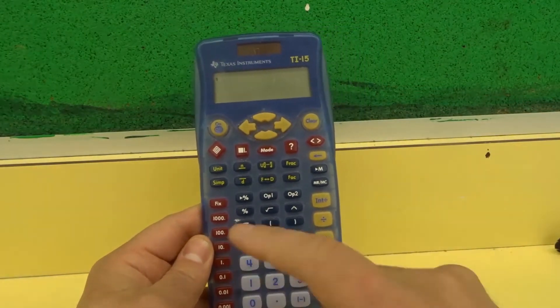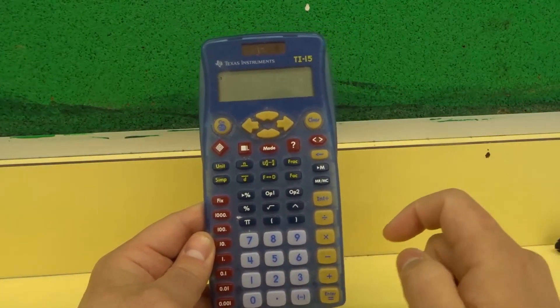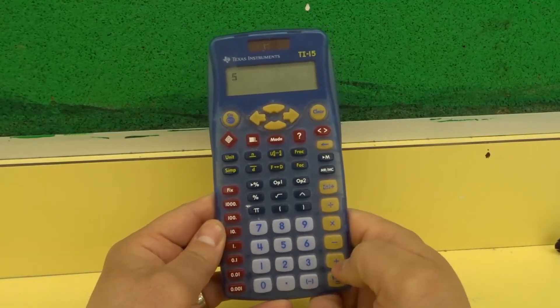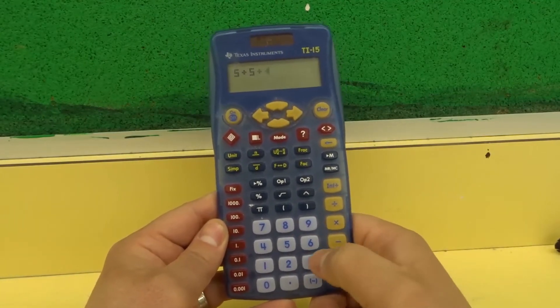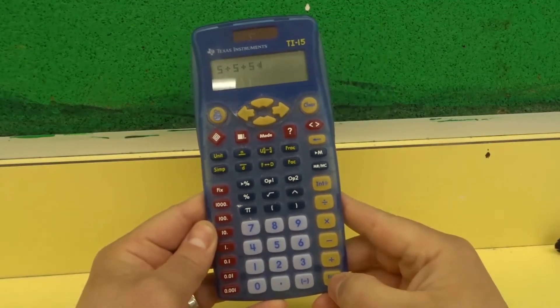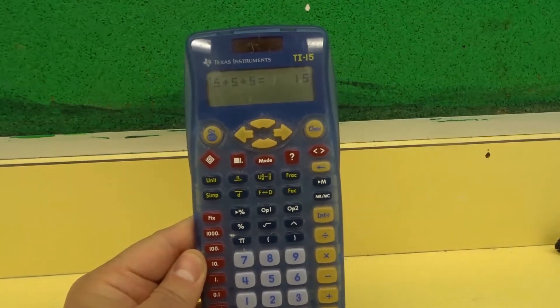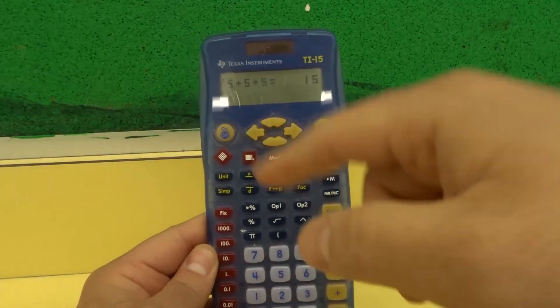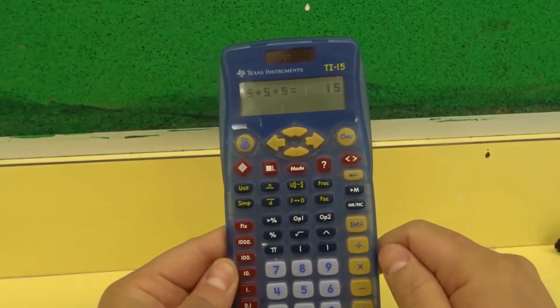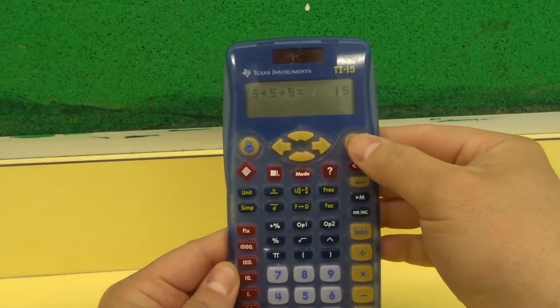So the good thing is that if you want to do multiple digits, more than two digits I should say, you can do that as well. So let's say I want it to do 5 plus 5 plus 5. I can hit equals or enter, and it gives me the answer right there as well. So it works out really well because you can do multiple digits. And on a calculator like this, it's going to show you all of those digits.